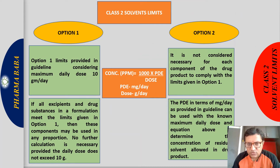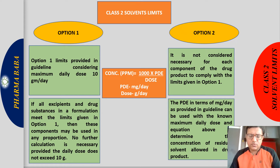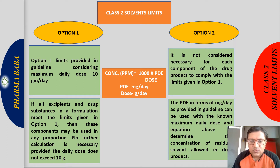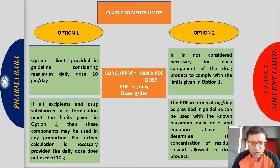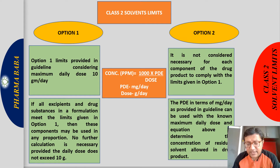For Class 2 solvents, two options are provided in the guideline to calculate the limit — this is the most important part. The equation is: Concentration (ppm) = 1000 × PDE / Dose, where Dose is the maximum daily dose and PDE is the permitted daily exposure of that particular solvent. In Option 1, we consider the maximum daily dose as 10 grams. If all excipients and drug substances in a formulation meet the Option 1 limit, those components may be used in any proportion and no further calculation is required, as long as the maximum daily dose remains less than or equal to 10 grams.